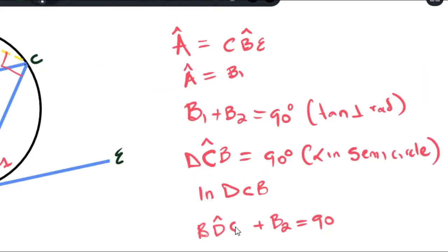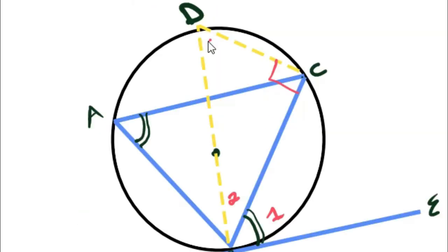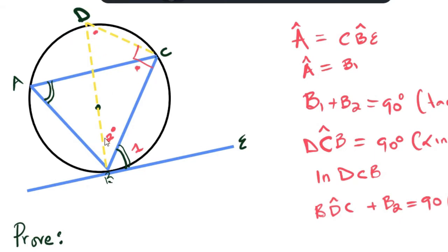angle BDC plus B2 is equals to 90 degrees. Now how do we know that is because the angles we get from here, the angles we get from here and the angles we get from there add up to 180 since that's sum of angles in a triangle. So since this is 90, the remaining angles you're going to get here would also be 90. That's why we know that BDC and B2 is equals to 90.